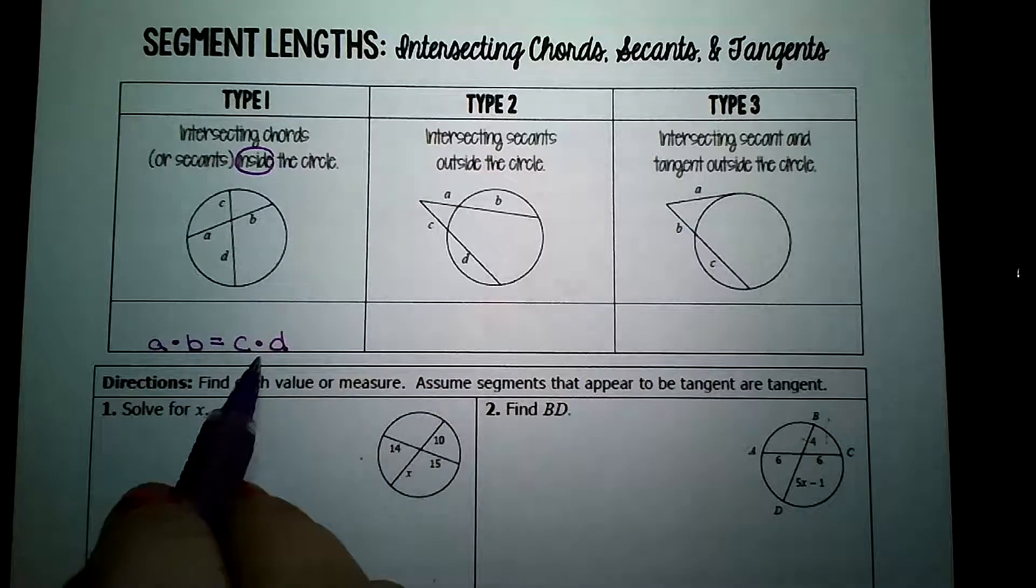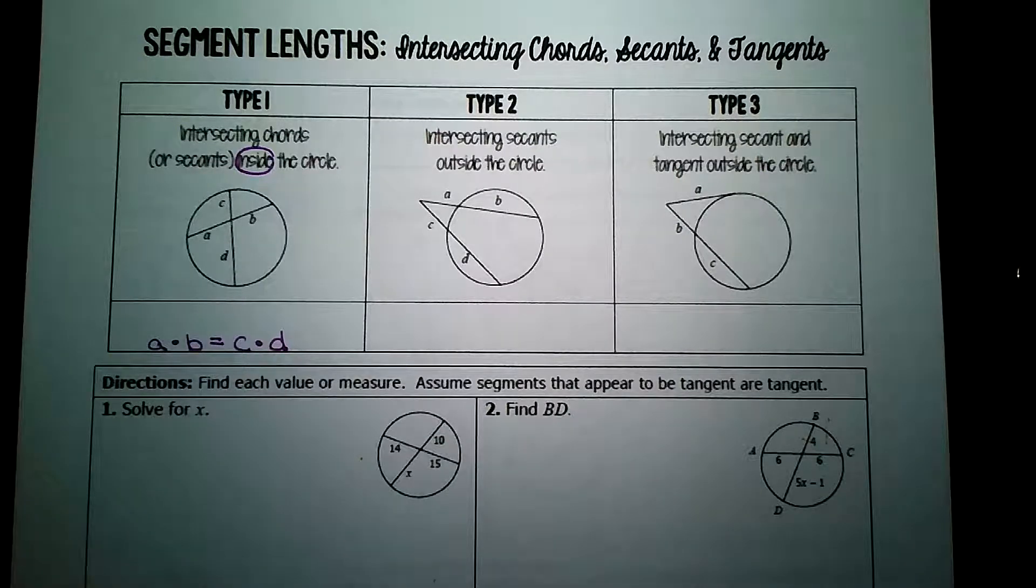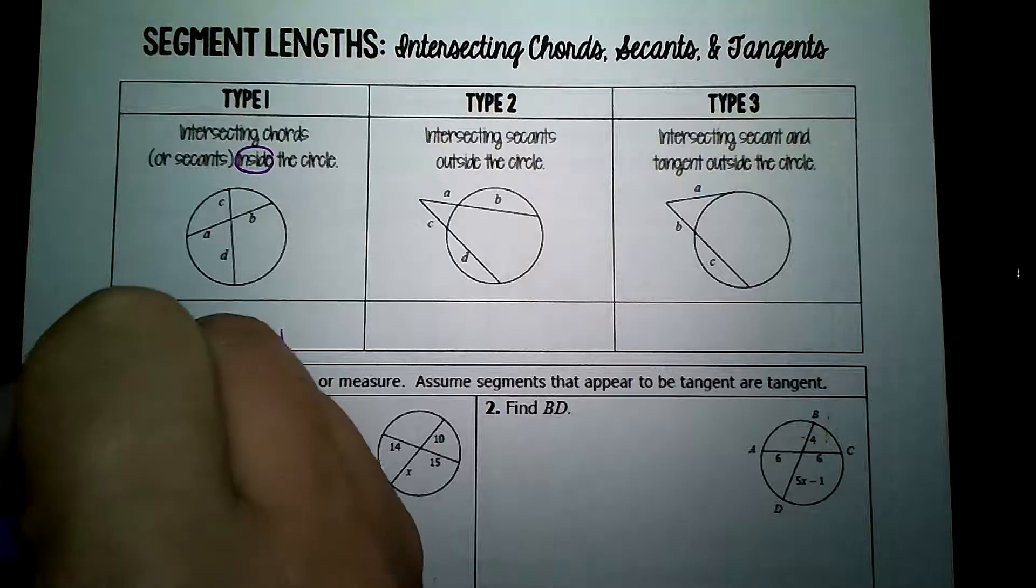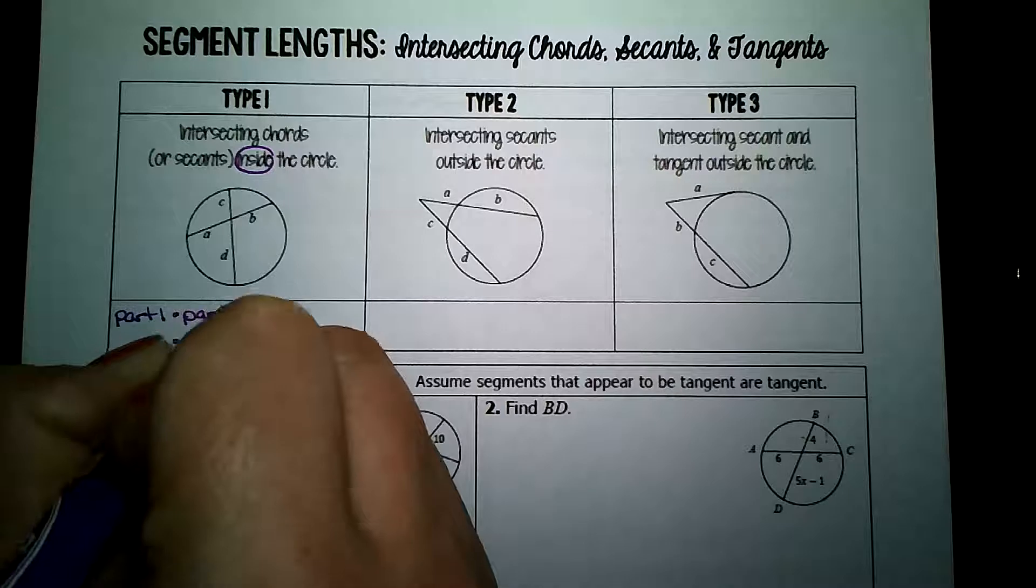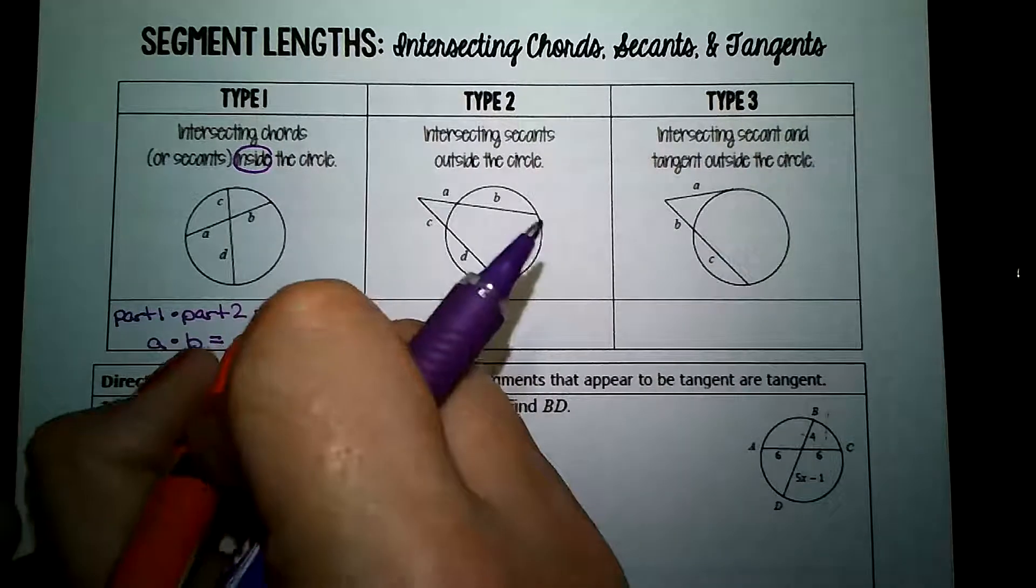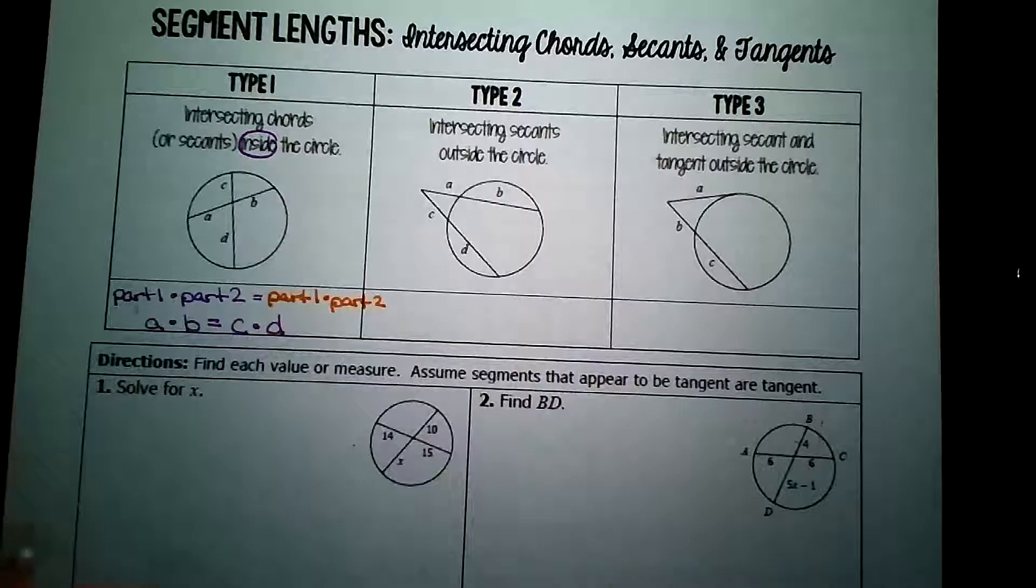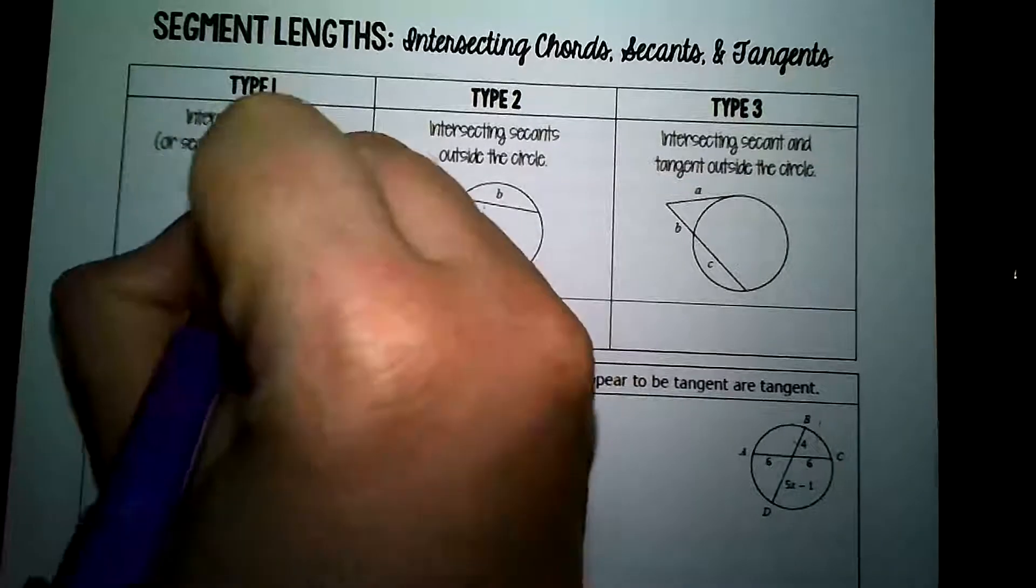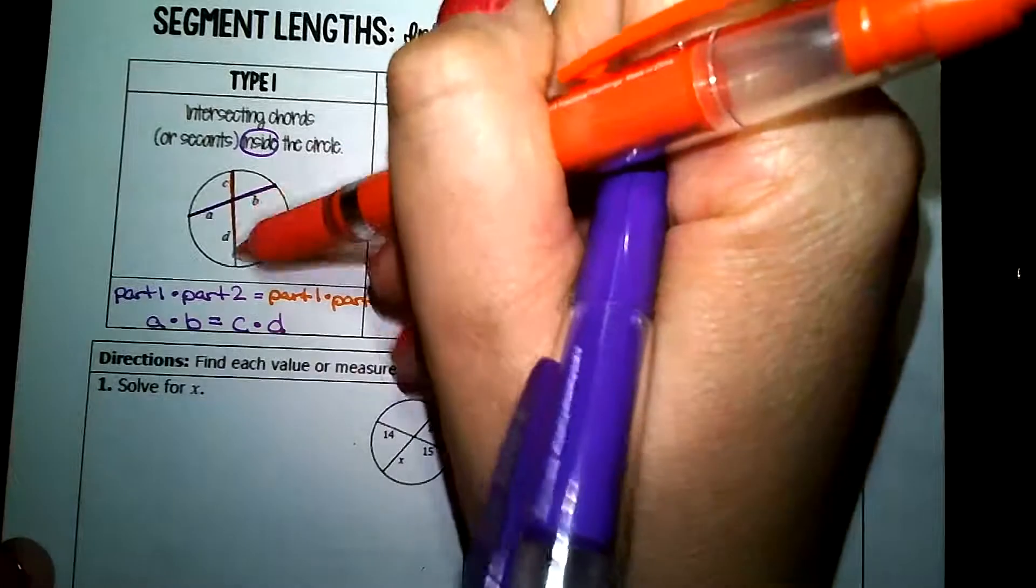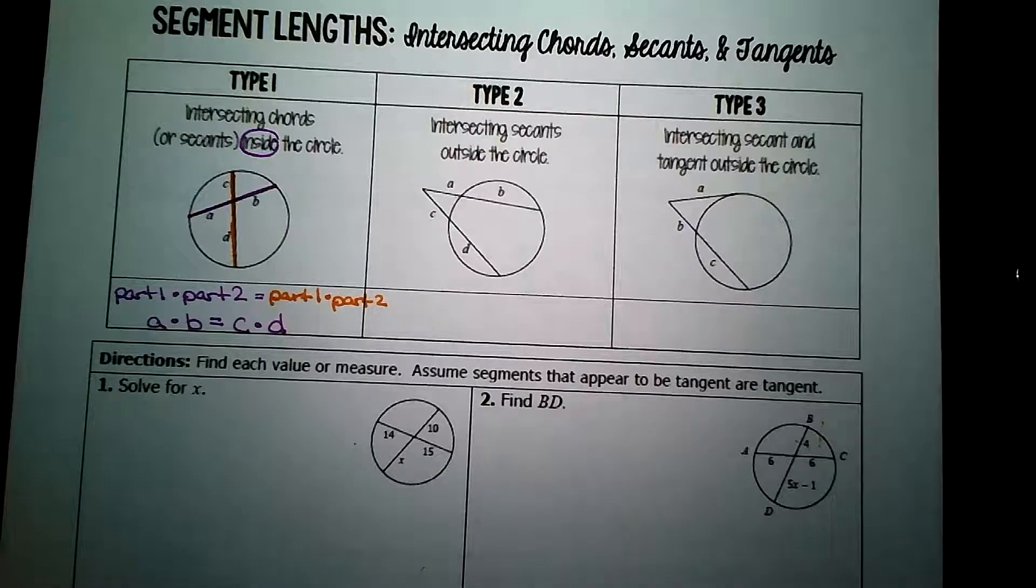Now, I think that's going to be really hard to understand if the numbers and letters all change. So I like to have kind of a set pattern. I'm calling it part 1 times part 2 within one chord is equal to part 1 times part 2 in the other chord. So part 1, I'm going to highlight in purple. That's where the A and B come from. Part 2, I'm going to highlight in orange. That's where the C and D come from.